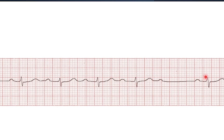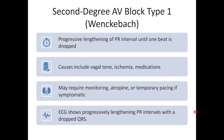For a second-degree AV block type 1, the PR interval starts out normal, but with each successive beat it gets longer and longer. Eventually the PR interval gets so long that the impulse is blocked and a QRS complex is dropped. After the drop beat, the cycle starts over with a normal PR interval, followed by progressive lengthening, then another drop beat — breaking rules 2, 3, and part of rule 5. A Wenckebach is typically caused by vagal tone, ischemia, or medications, and can often be self-limiting, though it can progress to a more serious block. Treatment may include atropine, temporary pacing, or cardiac pacing depending on whether the patient is symptomatic.